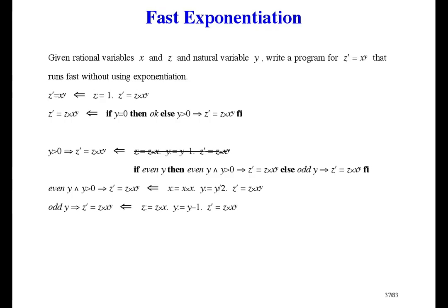Again we're done in the sense that there are no unsolved problems, and the program is correct and works, but still we can do better. Look at this even case: if Y is even and greater than 0 then it's at least 2, so when we cut it in half it's at least 1. Let's not throw away that information. Following Y gets Y divided by 2, we know Y is greater than 0, and we've already solved that one — so again it's done and better.